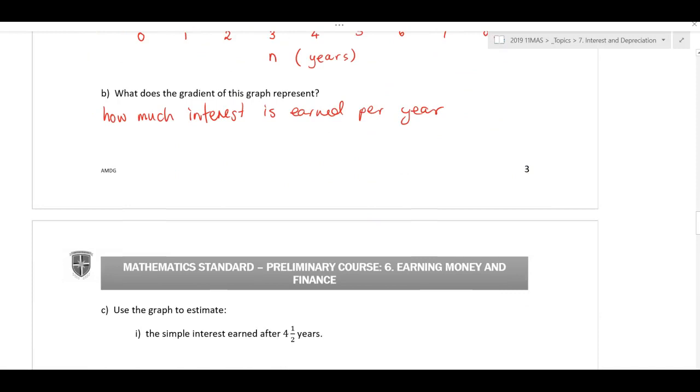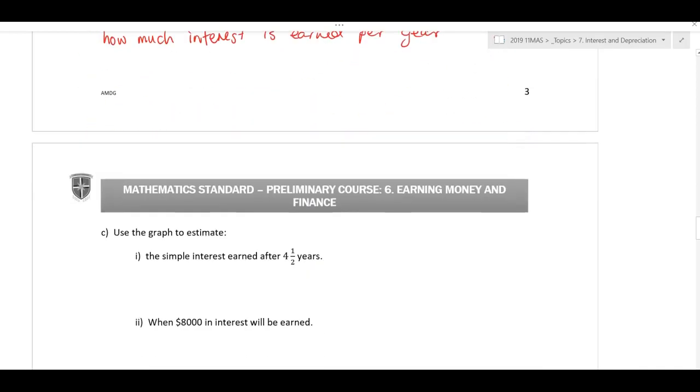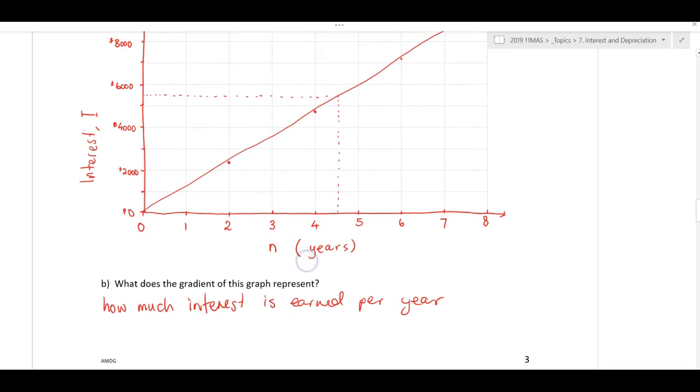And C, use the graph to estimate simple interest earned after 4.5 years. So, what I would need to do here is I go across to 4.5, and head up until I hit that line. Pivot, and go across. So, I should be able to work it out, I suppose. That should have been 4.8, plus another 0.6. So, about 5.4. I'm going to say, estimate at $5,400. That's about 5.4 there. Yeah, just a little less than halfway. Cool, 5.4.